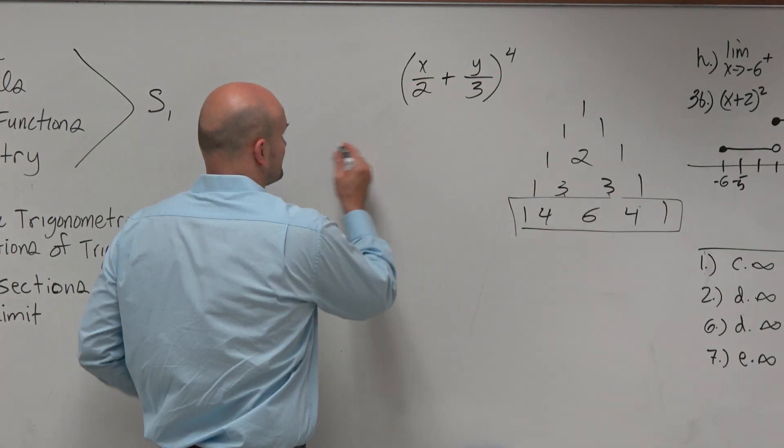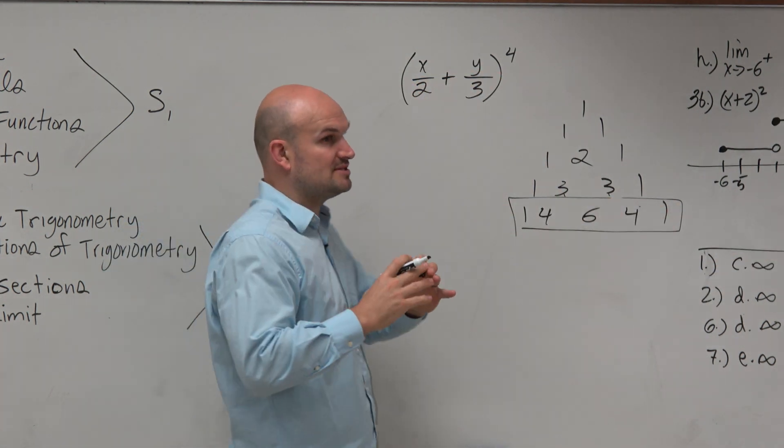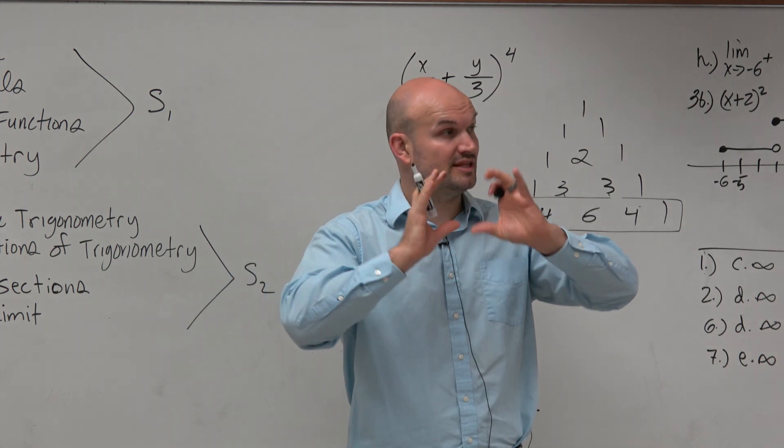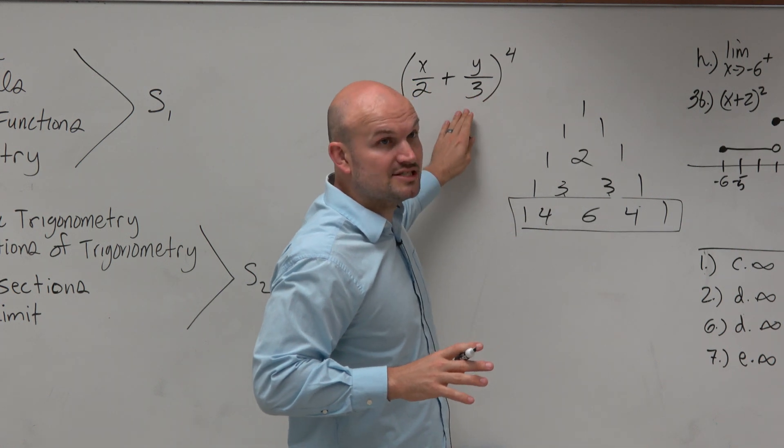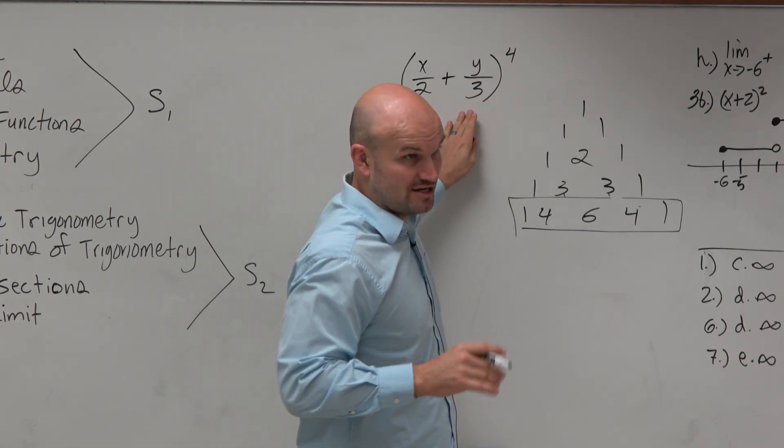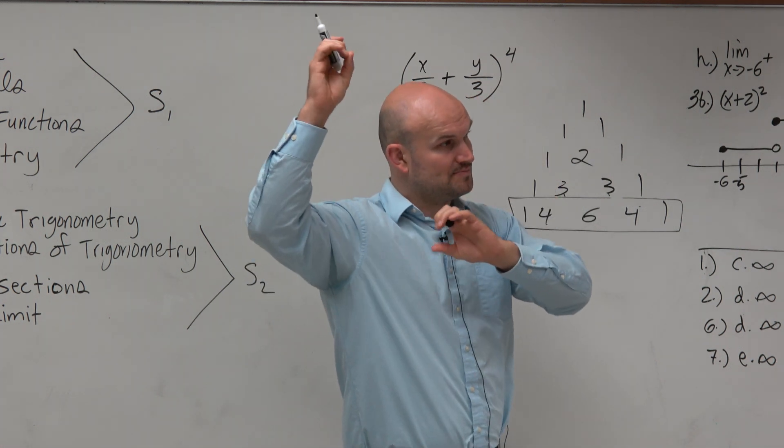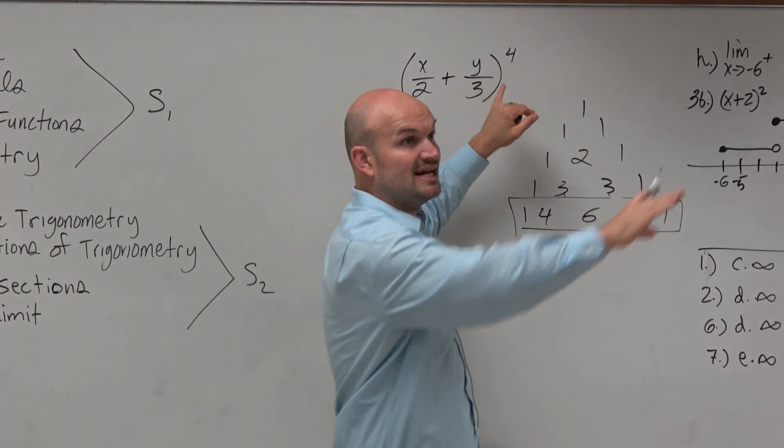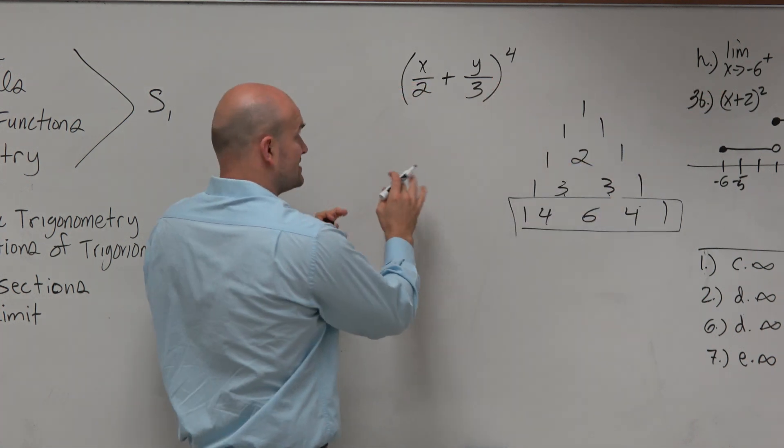So then we look at, well, remember, when we're doing expansion, the first term is always raised to the highest power, the power of your expansion. And the second term is raised to the zero power. Because the first power starts at the top, at that power, and then descends. And the second power starts at zero and ascends. So it's that perfect kind of symmetry.